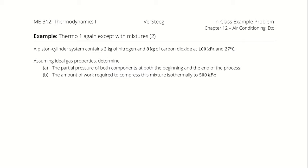A piston-cylinder system contains 2 kg of nitrogen and 8 kg of carbon dioxide at 100 kPa and 27 degrees Celsius. Assuming ideal gas properties, determine the partial pressure of both components at both the beginning and end of the process, and the amount of work required to compress this mixture isothermally to 500 kPa.